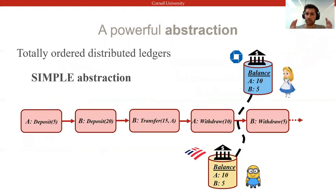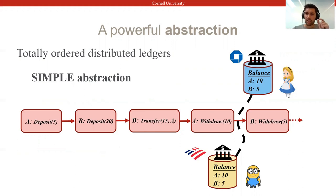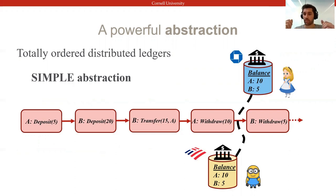At the heart of existing BFT and blockchain systems that address this problem lies the simple but beautiful abstraction of a totally ordered ledger. This is a really powerful abstraction because it allows our mutually distrustful parties to share and replicate data in a way that is resilient to at least some compromises or malicious behavior and still agree on a common view of the system state.